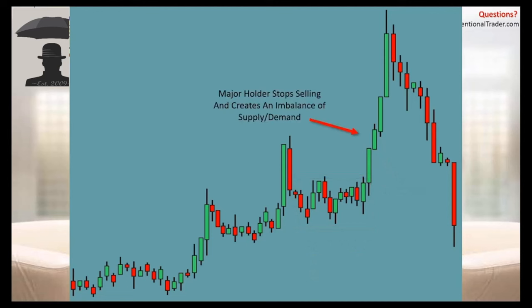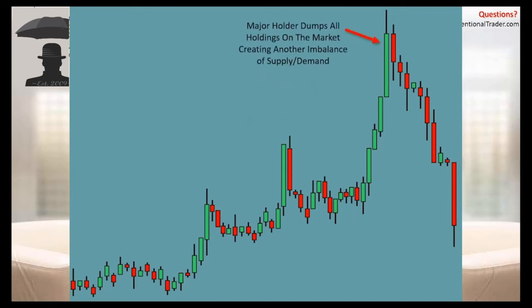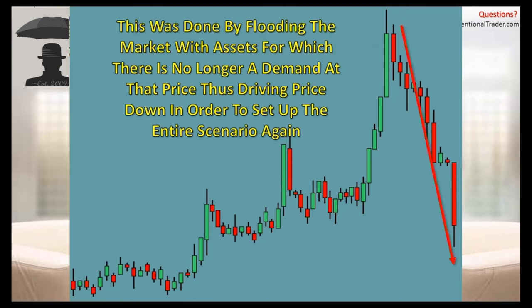The major holders stop selling. The buyers are still buying, but the major holders stop selling, which creates an imbalance of supply and demand. Because they created this imbalance, there is more demand than supply, which drives price up. The major holder then dumps all their holdings on the market, creating another imbalance of supply and demand, but the opposite. They flood the market, take out all the buyers, and overwhelm the market with all of these assets, which causes price to plummet.